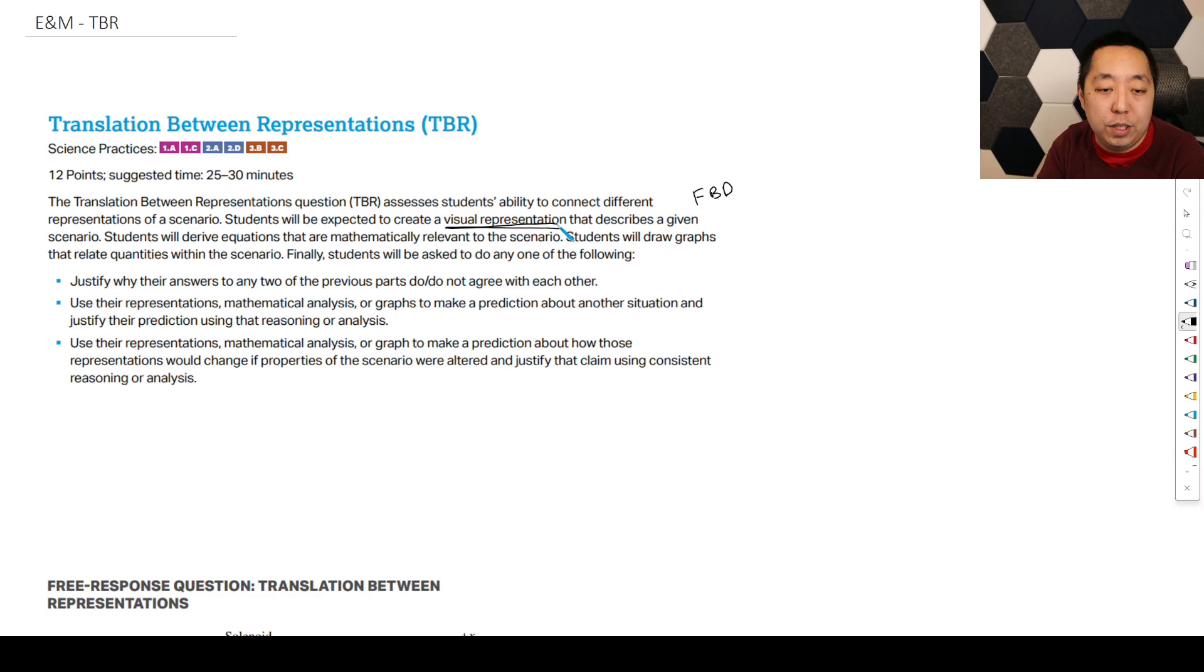There's four main things you're going to be asked to do. You're going to create a visual representation that describes a scenario. This can be like a bar graph or a free body diagram, some kind of drawing or visual of what it is, like the direction of the electric fields. You will derive an equation, so some kind of derivation, which is pretty standard. And we will also draw a graph.